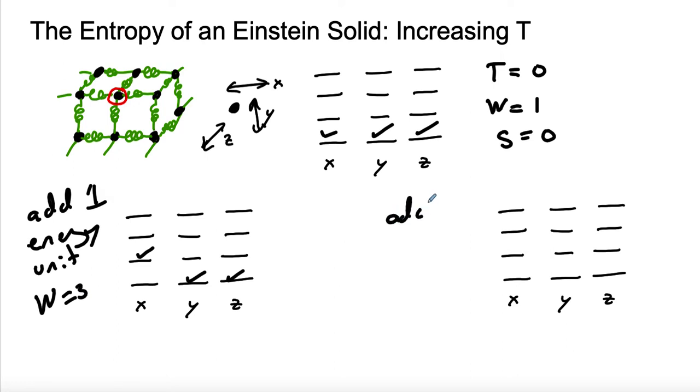If we were to imagine instead to increase the temperature even more and add two energy units, we could put all of them here and put these in the ground state, or we could put all of them here, or all of them there. That's three different ways we could put it. Or we could imagine putting one here and one here. That would still be two energy units. And if you count up all the different ways you have of shuffling around two energy units, you would see that w, in this case, is going to be equal to six.